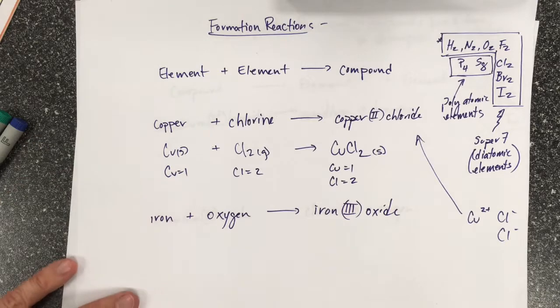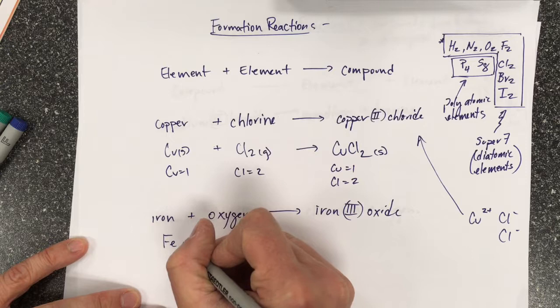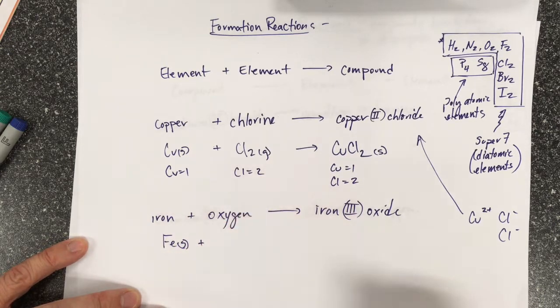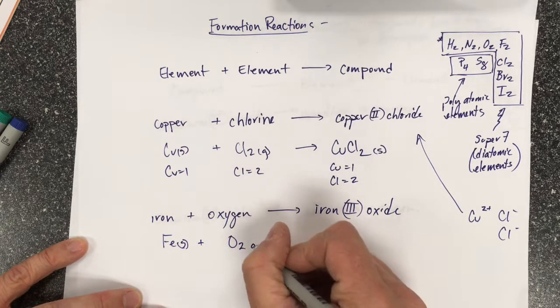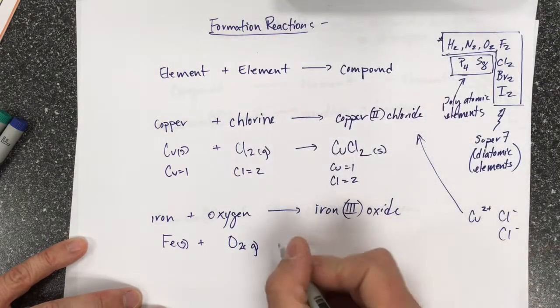But when I try to do the same thing with iron, iron is listed as a monoatomic element. Oxygen is a diatomic element. It's again listed here. It makes iron 3 oxide.